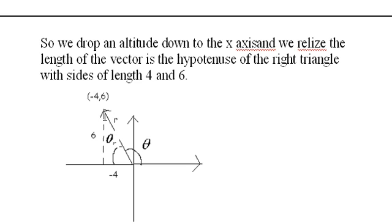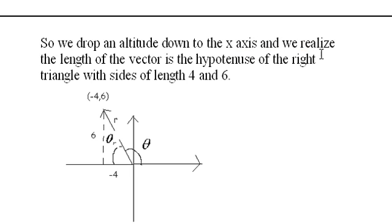So we drop an altitude down from the head of the vector to the x-axis. This is the x-axis here. We realize that the length of the vector is the hypotenuse of this right triangle, with sides of length 4 and 6.